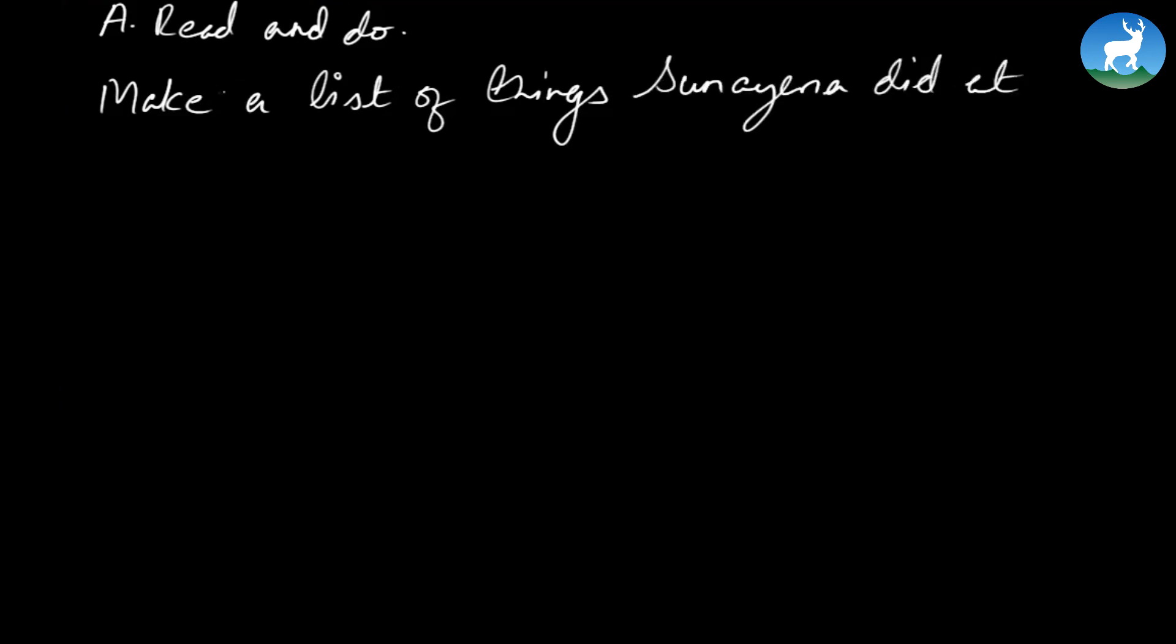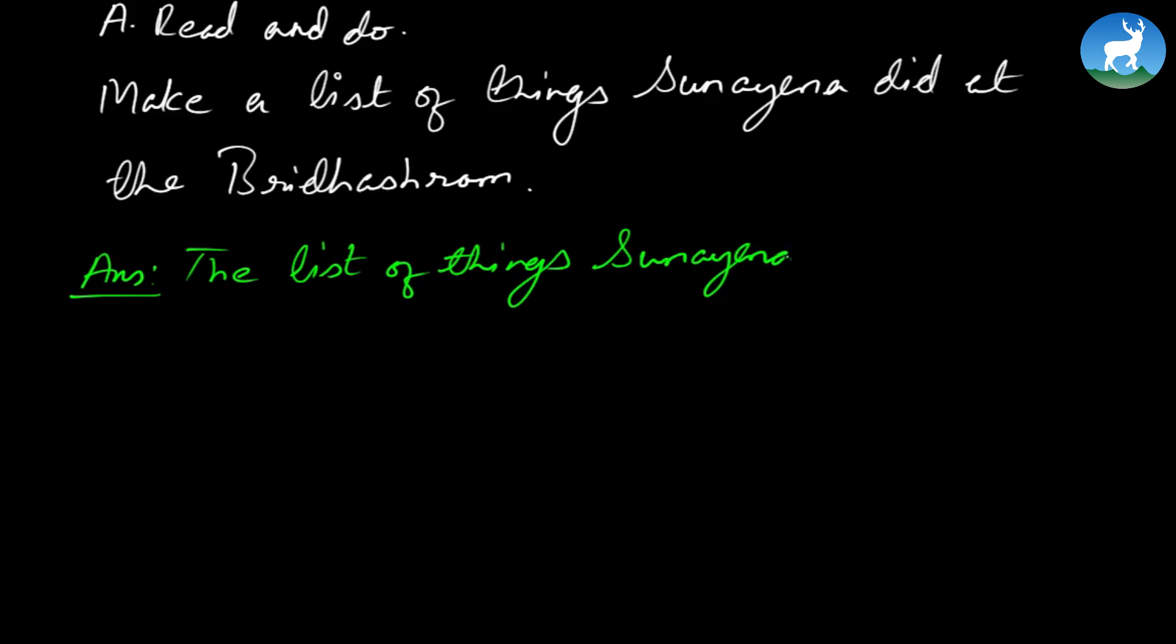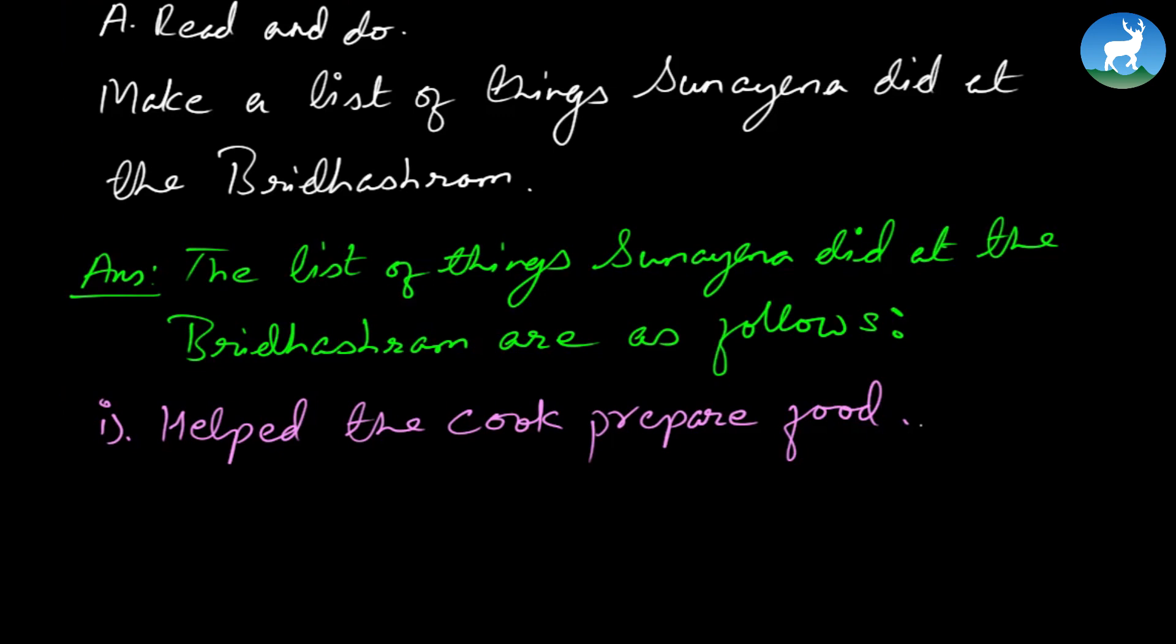Now, it says number A, read and do. Make a list of things Sunaina did at the Bridashram. You've got to read the passage for this. I want to start the answer like this: The list of things Sunaina did at the Bridashram are as follows. Number one, the book itself helps you with helped the cook prepare food. That's just one of the activities which she does at Bridashram. Now, to do the rest, you'll have to read the passage and list down all the work which she has done at the Bridashram.